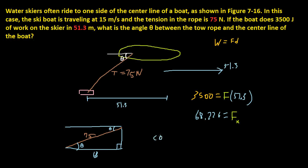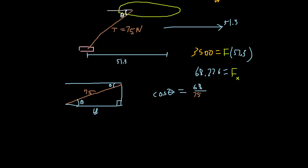So we just write cosine of theta is equal to adjacent, which is this, so I'm just going to round for now, 68 over 75. And to solve for theta, we just take arc cosine of each side, and then we get theta is equal to arc cosine of 68 over 75, which happens to equal...